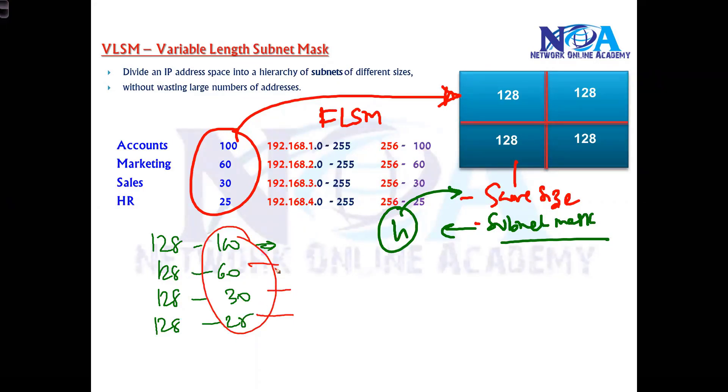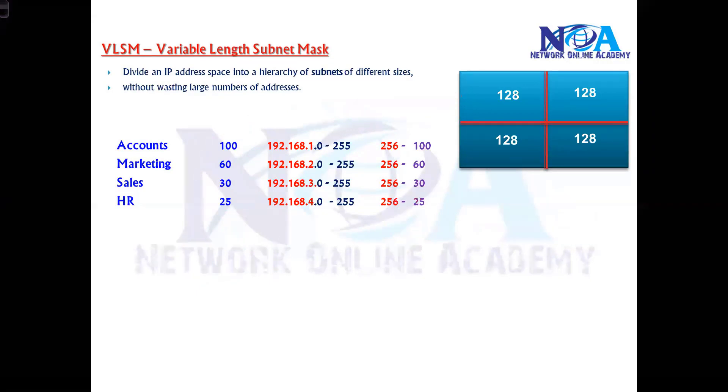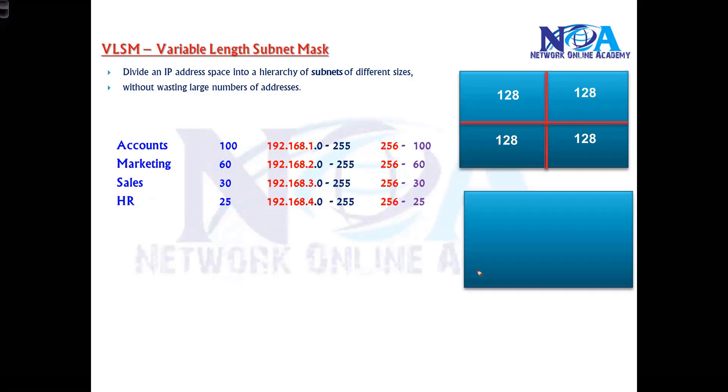In VLSM, we divide in variable sizes. I'm going to use one network and divide it into two parts. For the 100 requirement, I go with the size of 128, so I'll allocate 128 size for the accounts department.